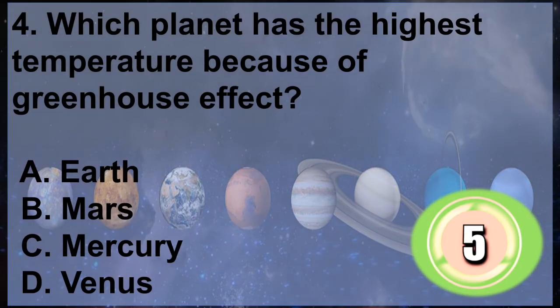Question 4: Which planet has the highest temperature because of greenhouse effect? A. Earth, B. Mars, C. Mercury, D. Venus. You have 5 seconds to answer. Time's up.